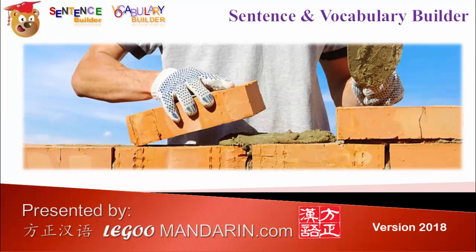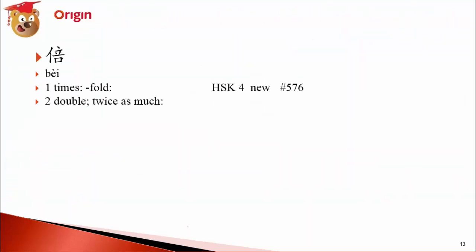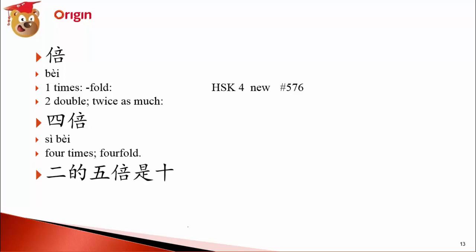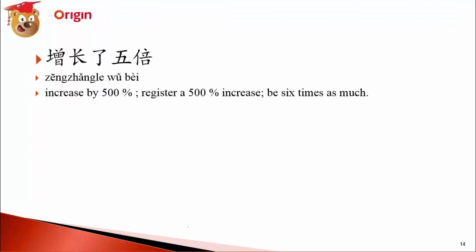Now let's look at sentences using 倍. 双倍 means double or twice as much. 四倍 means four times. 2的5倍 equals 10 — my math is not so bad, 5 times 2 is 10! 增长的5倍 means 'increased by five times,' which is an increase of a hundred percent times the base amount.